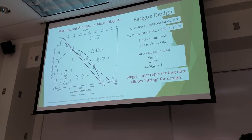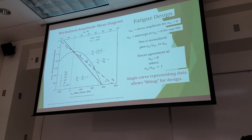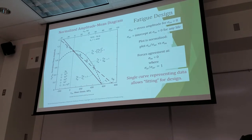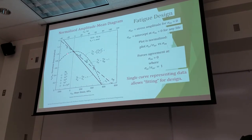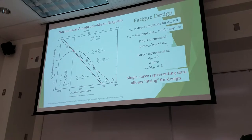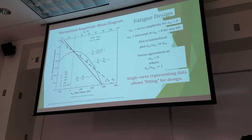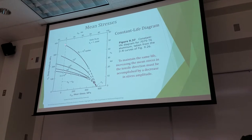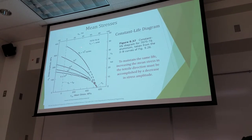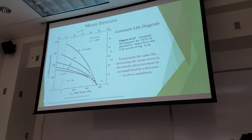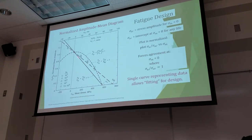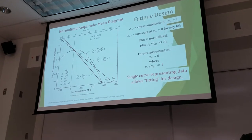So what we do is we normalize our stress amplitude against our fully reversed stress amplitude and plot that against a changing mean stress. And what it does is it condenses all the data down to where we can draw trend lines through the data — it squishes all of these data points into one area where now we can plot some kind of trend line.